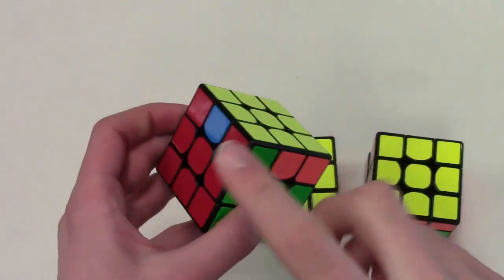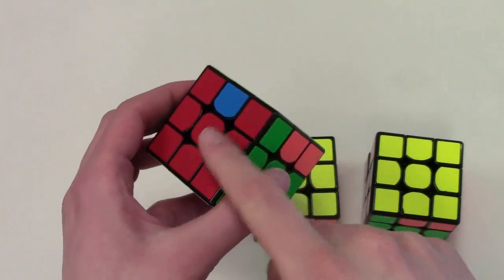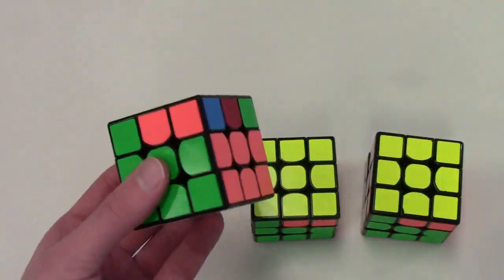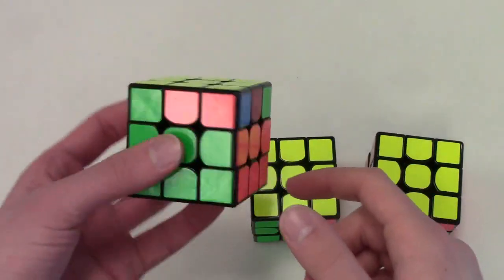The second ALG that I use for this G-perm is when the headlights are aligned with their color. This is simply the normal RUD ALG that most people use for two-handed nowadays.